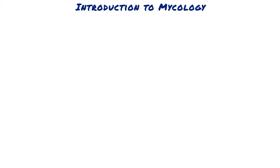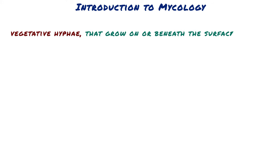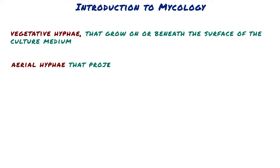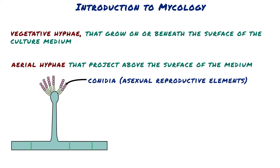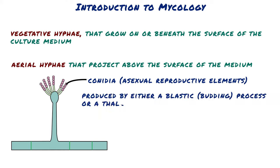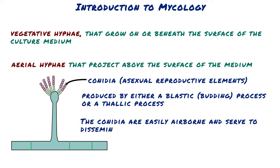When growing on agar or other solid surfaces, moulds produce hyphae termed vegetative hyphae, that grow on or beneath the surface of the culture medium, and also hyphae that project above the surface of the medium, so-called aerial hyphae. The aerial hyphae may produce specialised structures known as conidia. The conidia may be produced by either a blastic — budding — process or a thallic process where hyphal segments fragment into individual cells or arthroconidia. The conidia are easily airborne and serve to disseminate the fungus.